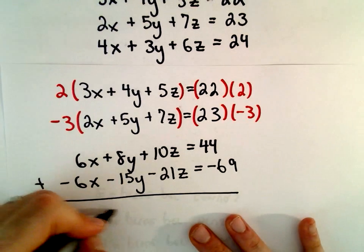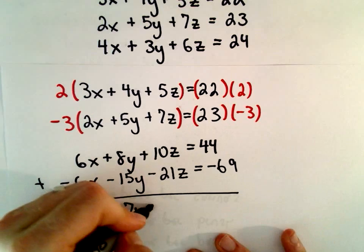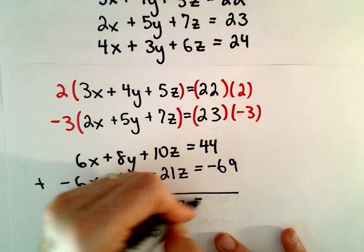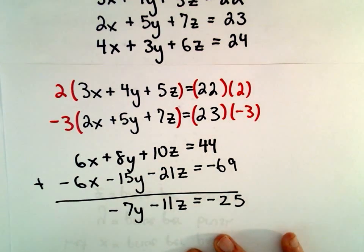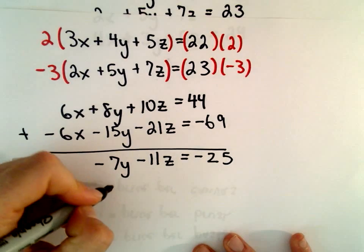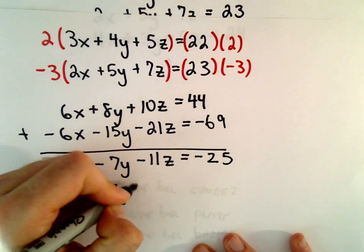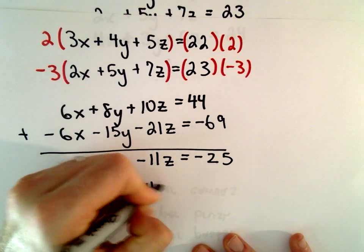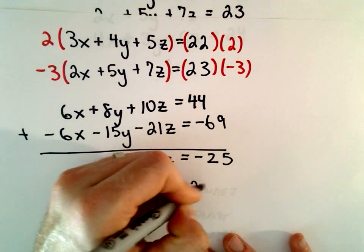If we add those, we'll be left with negative 7Y minus 11Z equals negative 25. I'm going to multiply both sides by negative 1, so we'll have 7Y plus 11Z equals positive 25.